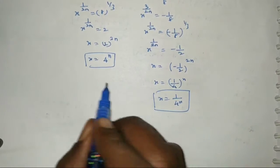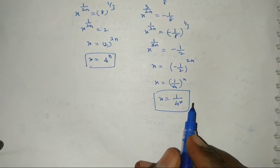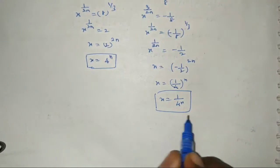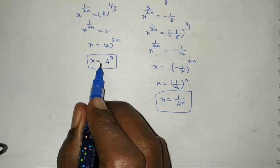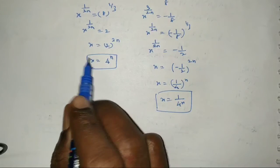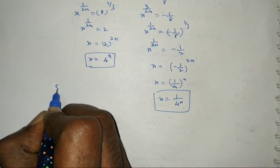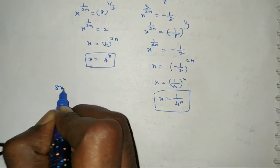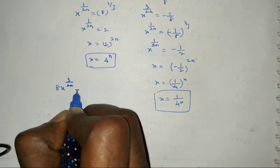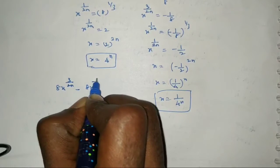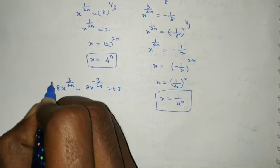So we have two answers: x equal to 4^n and x equal to 1 by 4^n. Now we verify by substituting back into the original equation 8x^(3/2n) minus 8x^(-3/2n) equal to 63.